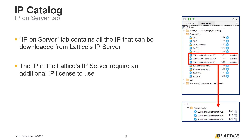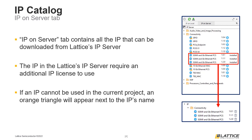One important thing to remember is that all of the IP in the IP on Server tab require an IP license to use. If users do not have a license for the IP they download, they will not be able to generate a valid bit stream unless their strategy is configured correctly. Another important thing to note is that all IP available for download will appear in this tab, even if the IP is not compatible with the current project device. If an IP is incompatible with the current project device or some other project setting, an orange triangle will appear next to the IP's name, indicating that it cannot be used in the current project.